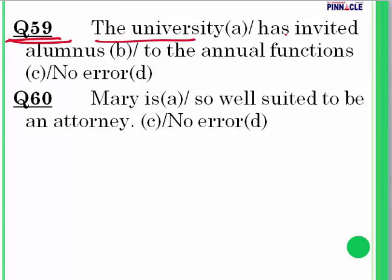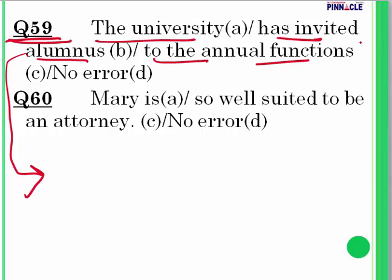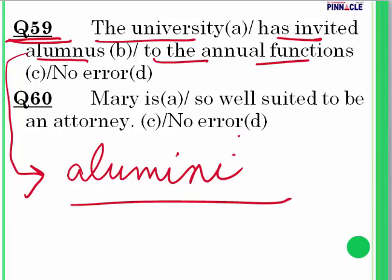Question 59: 'The university has invited a luminous to the annual functions.' The word 'luminous' is incorrect here. The correct word is 'alumni' (a-l-u-m-n-i), which refers to former students. Replace 'luminous' with 'alumni.' The error is related to incorrect word choice.